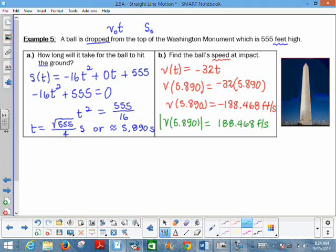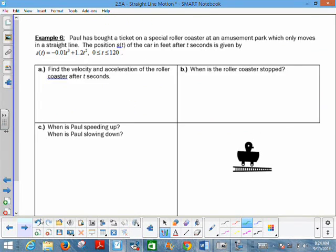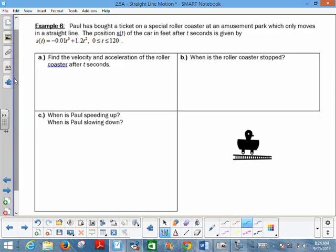That takes care of example five. Now moving on to example six, we have another similar straight line motion problem here. It says that Paul bought a ticket on a special roller coaster at an amusement park which only moves in a straight line. The position s(t) of the car in feet after t seconds is given by this position equation. Our time interval would go from 0 to 120 seconds. So it's a short two minute ride on what seems to be a pretty boring roller coaster in that it just moves along this boring straight line. But you'll notice that the same kind of questions are going to be asked. Part A, find the velocity and acceleration of the roller coaster after t seconds.